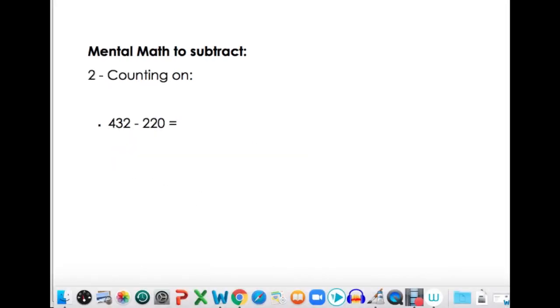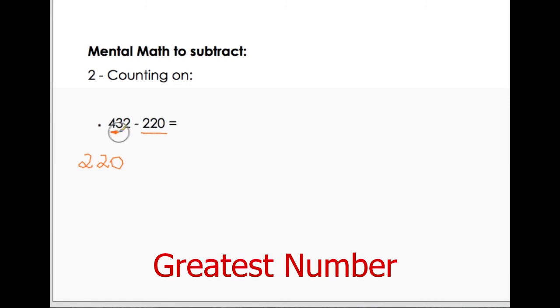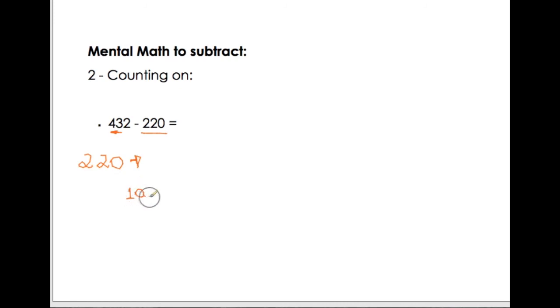This is strategy counting on. What we are going to do? We are going to get our number here that we are subtracting 220, and we are going to count until we get to the greatest number. So, I will do this. I will first do by 100. So, I will add 100 here, and I will get 320.